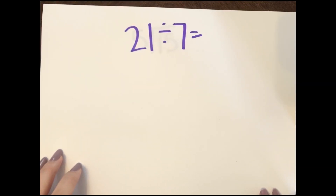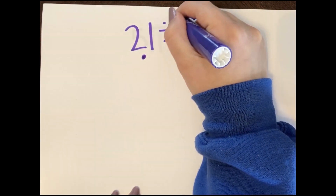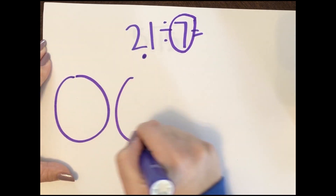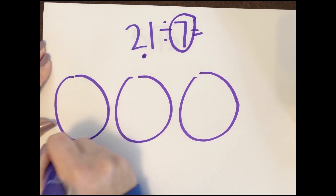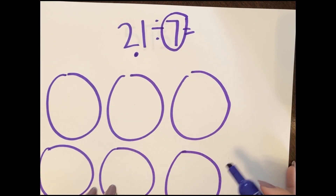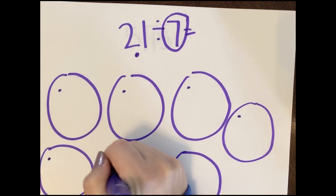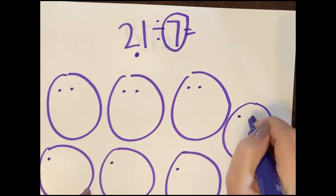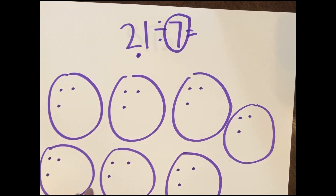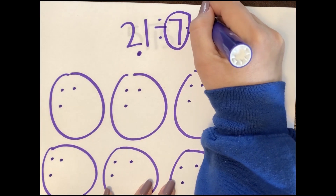Let's go ahead with our next problem: 21 divided by 7. Put dots by the 21, circle the 7 for groups, and draw 7 groups. Count out 21 pieces, distributing them one at a time across all 7 groups. Counting how many are in the first group: 1, 2, 3. So 21 divided by 7 equals 3.